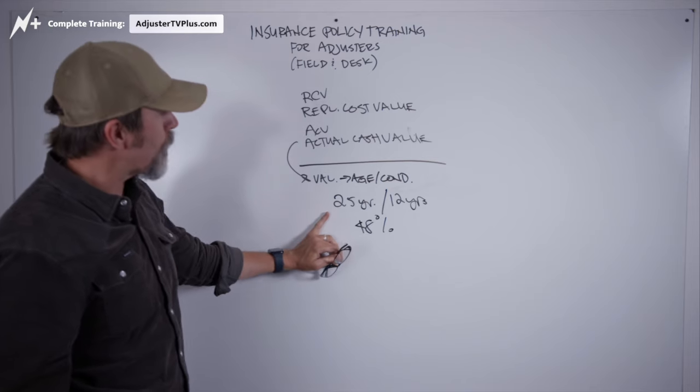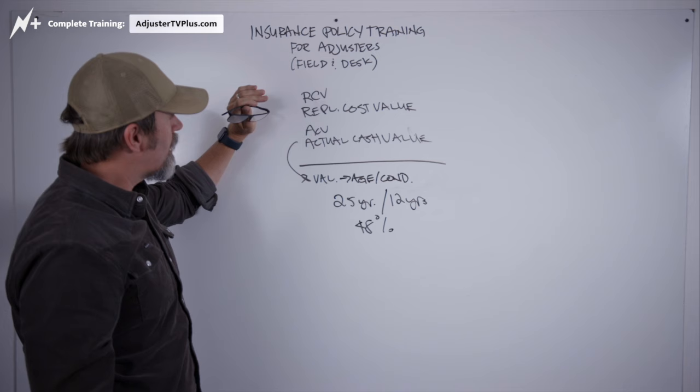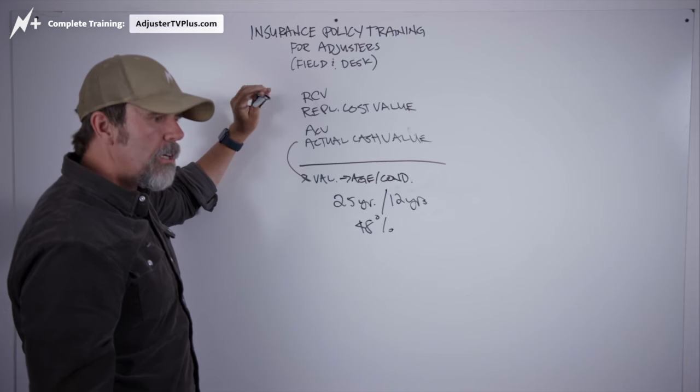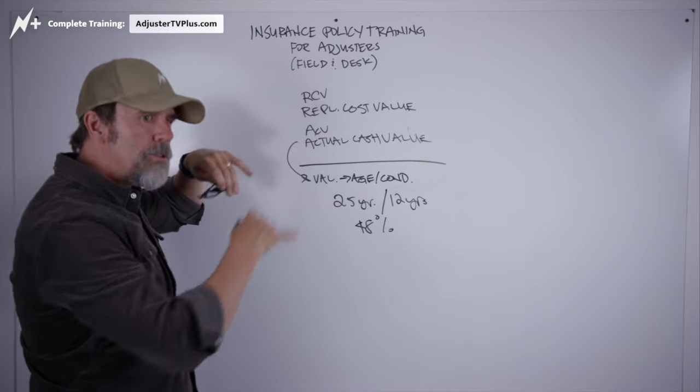So I'm talking to the homeowner say grant totals, 20,000 bucks. And when it's all said and done, that should be the grant totals that we give you less your deductible.